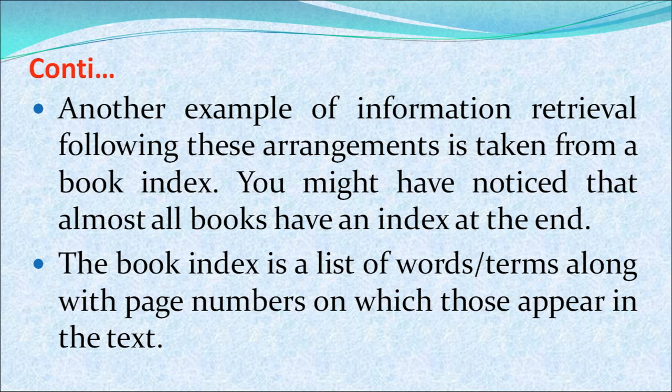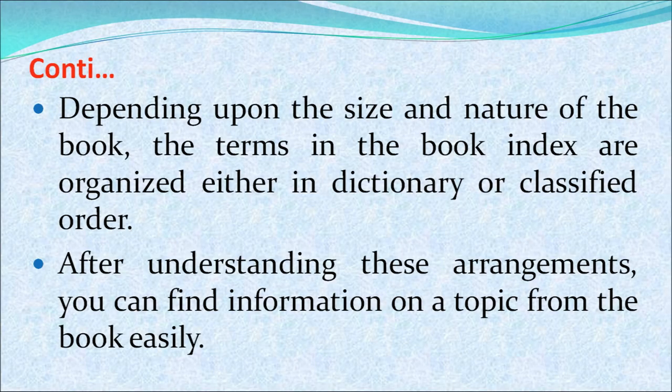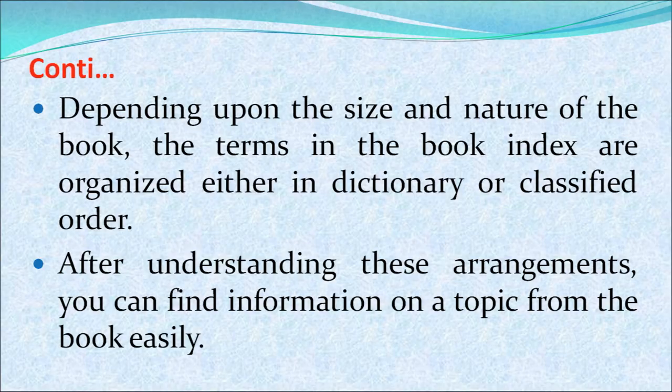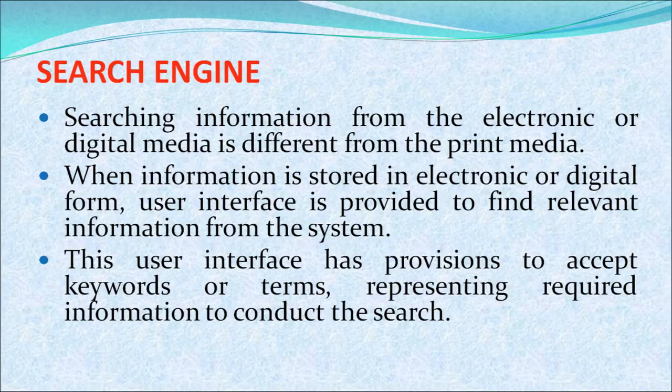Another example of information retrieval following these arrangements is taken from a book index. Almost all books have an index at the end — a list of words and terms with the page numbers on which they appear. That is also a way of retrieving information. Depending upon the size and nature of the book, terms in the book index are organized either in dictionary or classified order. If it is a small book, we can arrange it alphabetically; otherwise, we can use a classified order. Understanding these arrangements helps us find topics from a book easily.